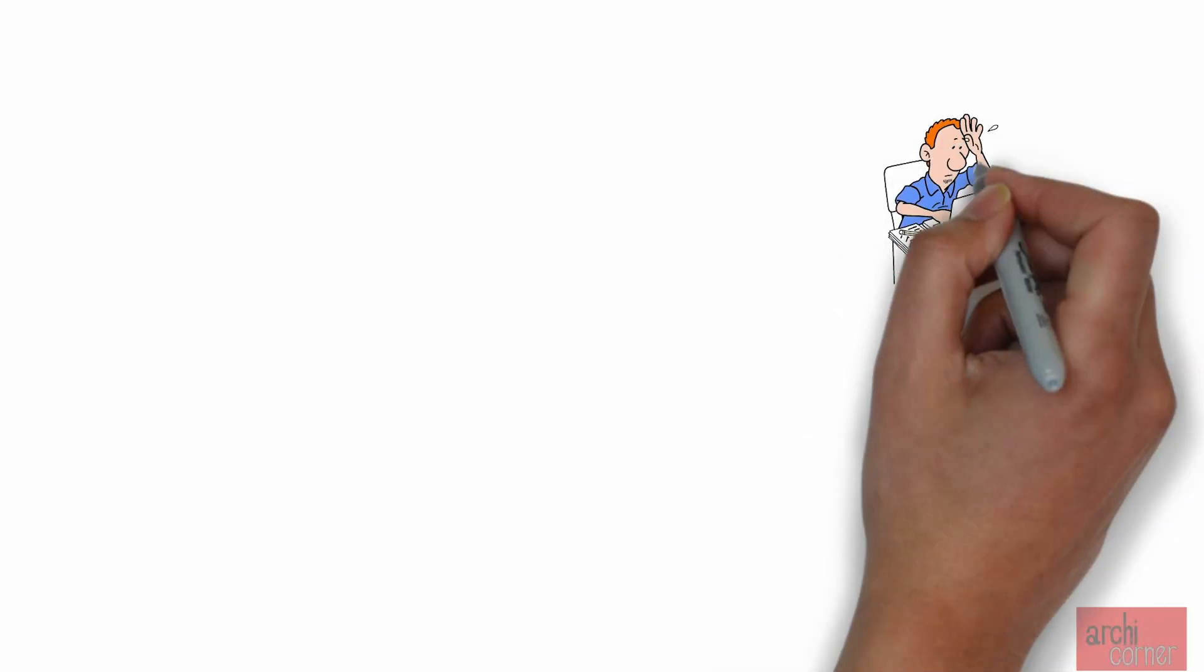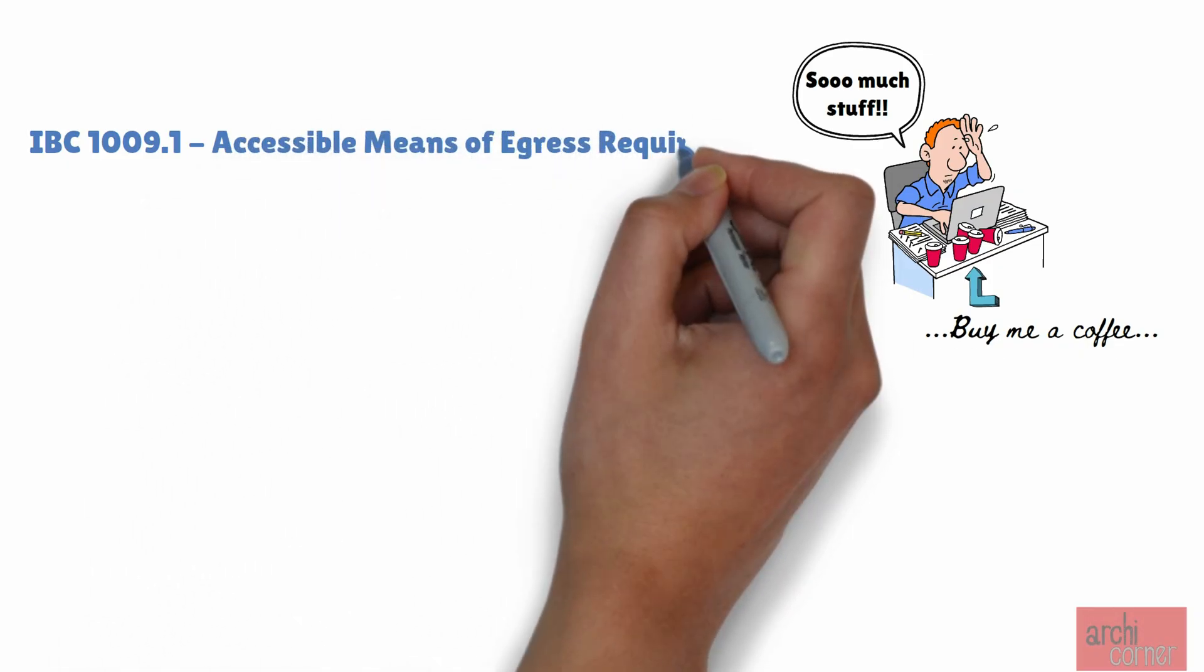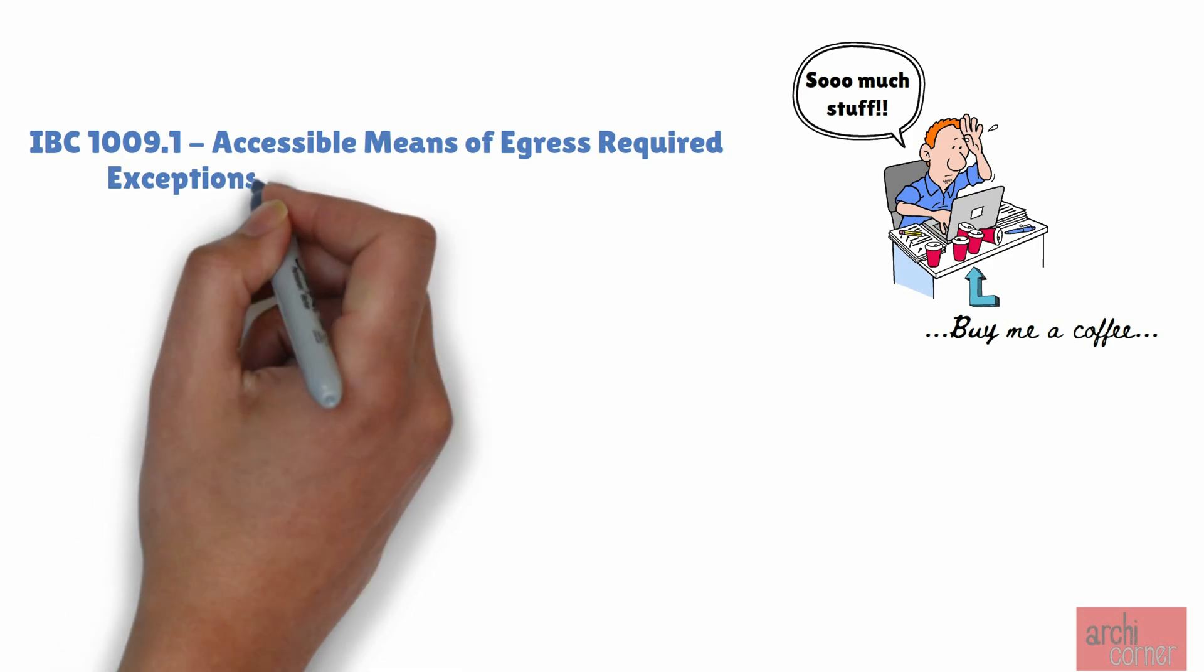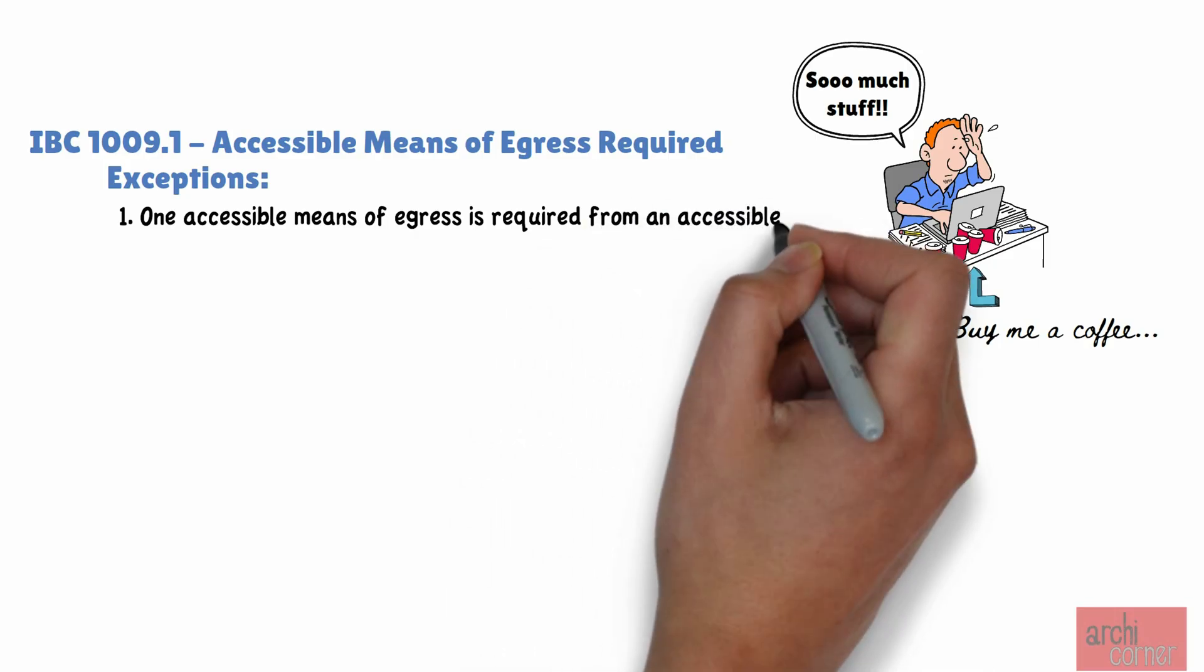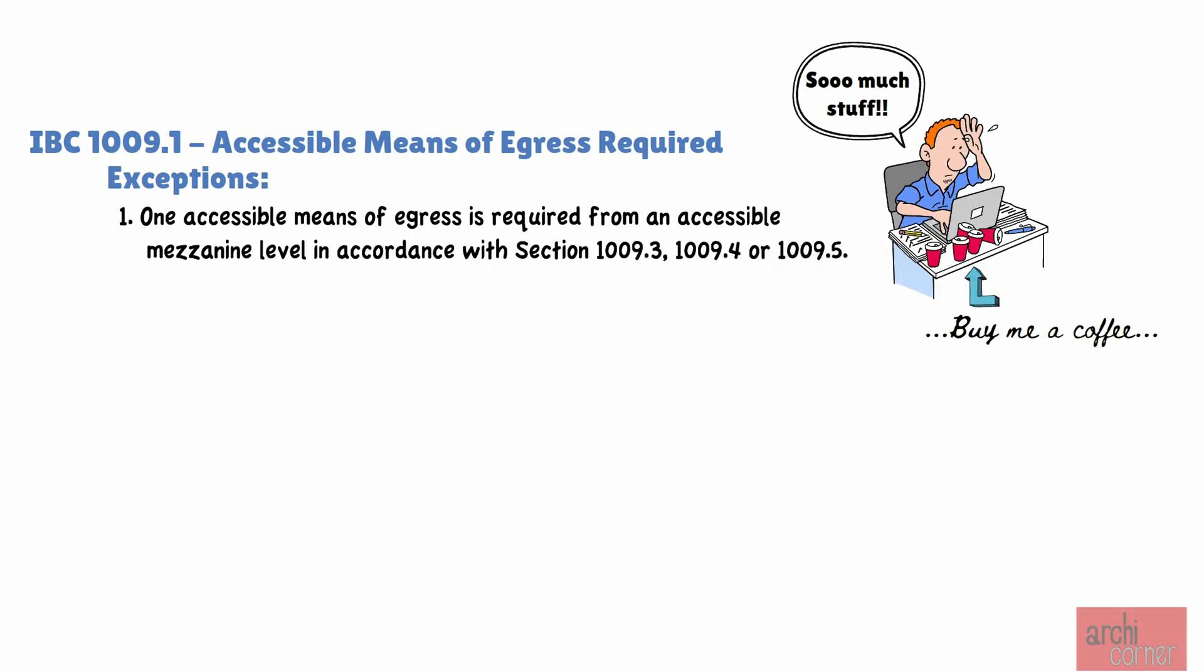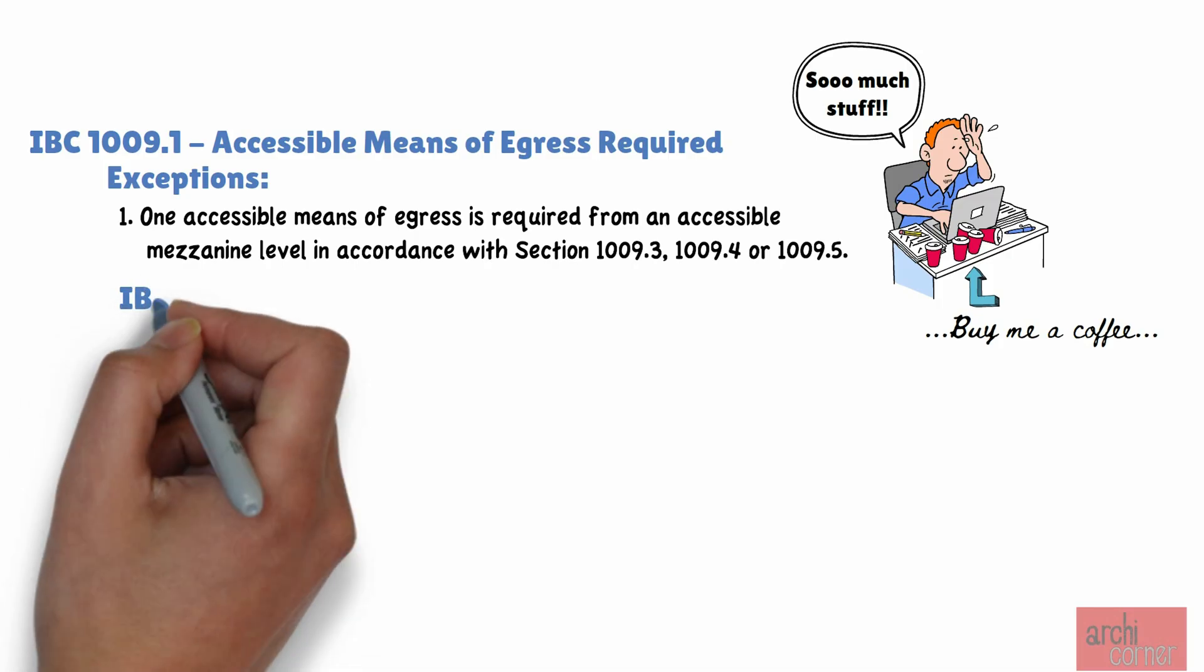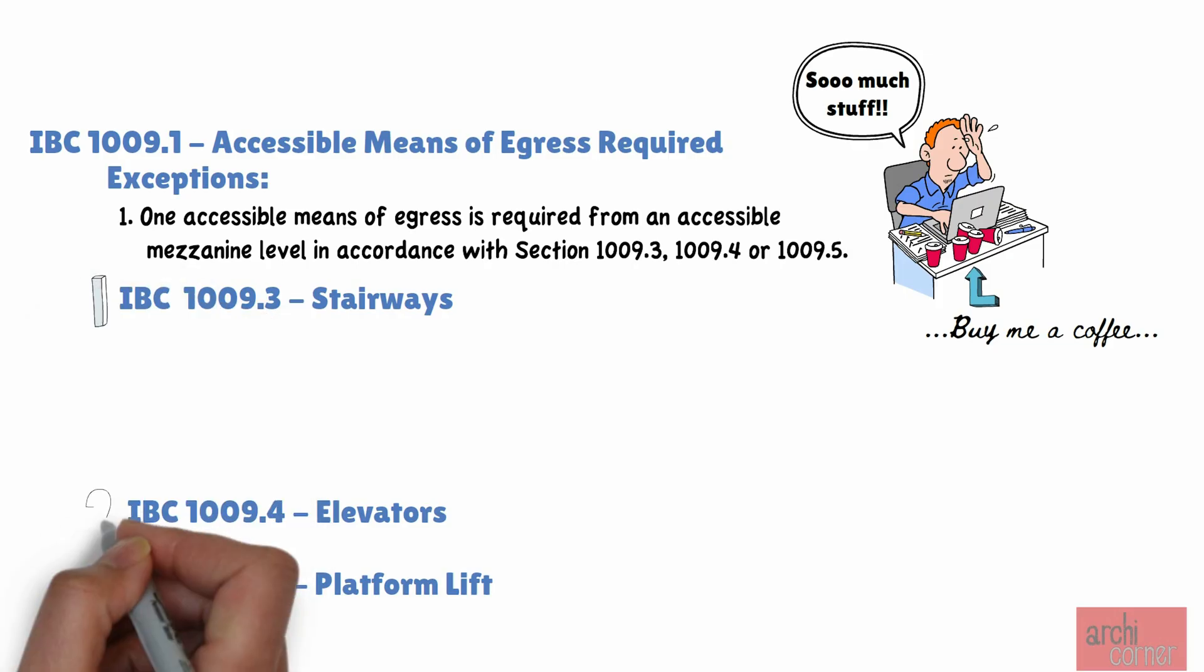Now, we're almost wrapped up guys, just a few little things left. IBC code section 1009.1 titled Accessible Means of Egress Required has an exception which is what we are interested in. Exception number one. It reads, One accessible means of egress is required from an accessible mezzanine level in accordance with section 1009.3, 1009.4, or 1009.5. We are not going to go into the details, but in short, 1009.3 states that we can use a stairway, 1009.4 states that we can have an elevator, and finally, 1009.5 states that we can use a platform lift. For more detailed information, you can read the desired section, but the point is that any of those three would meet the requirement of exception one.